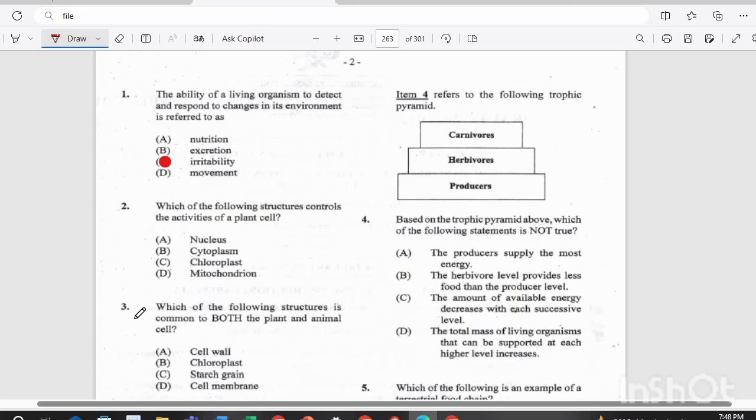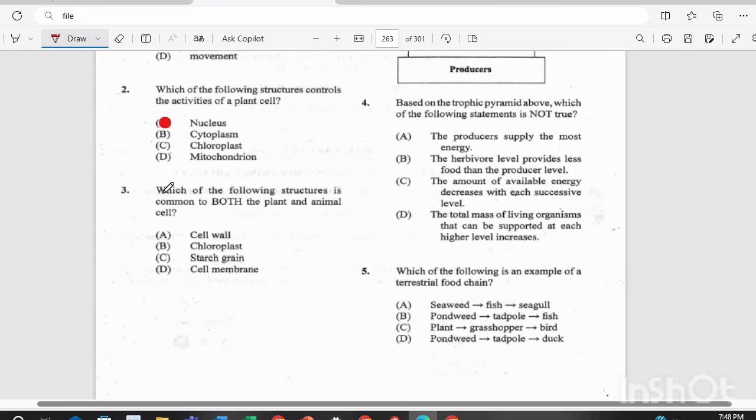Question two. Which of the following structures controls the activities of a plant cell? A. The nucleus, B. Cytoplasm, C. Chloroplast, or D. Mitochondrion. The answer there is A. The nucleus.